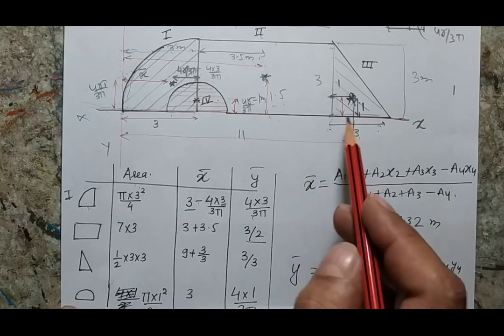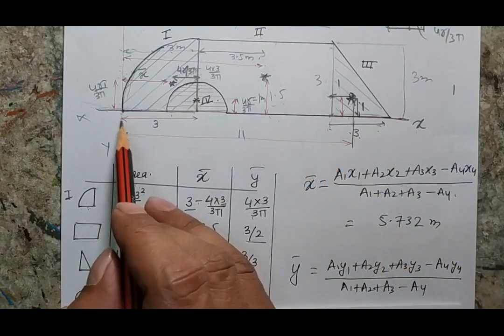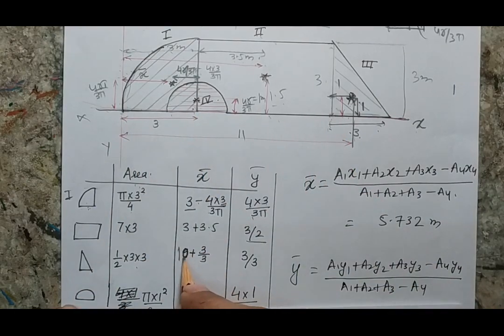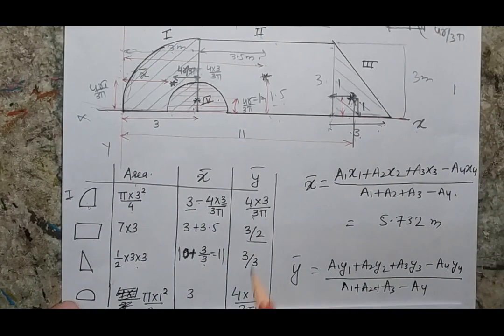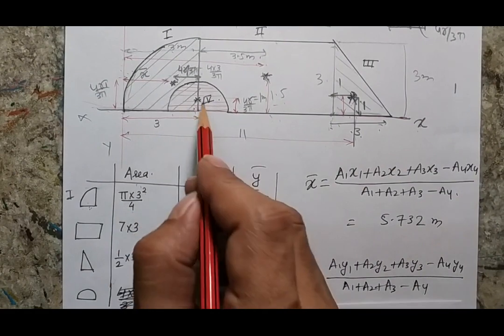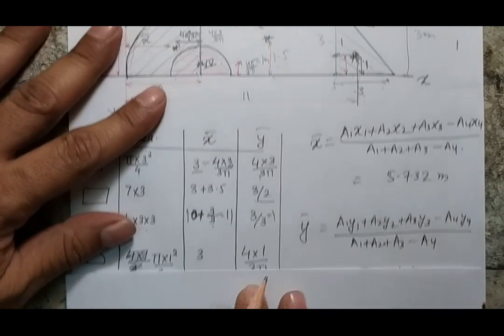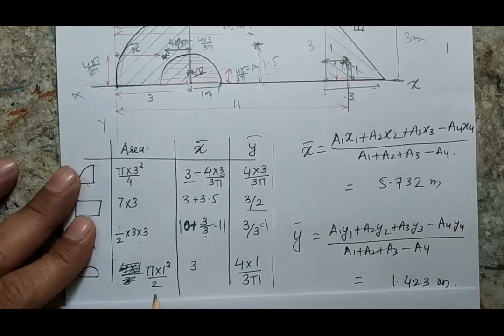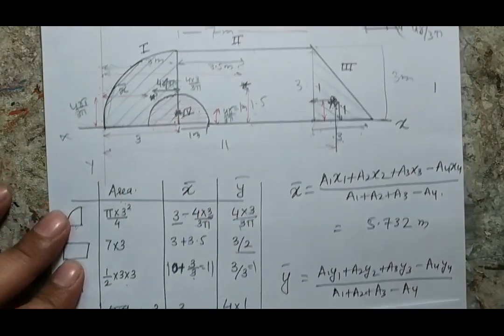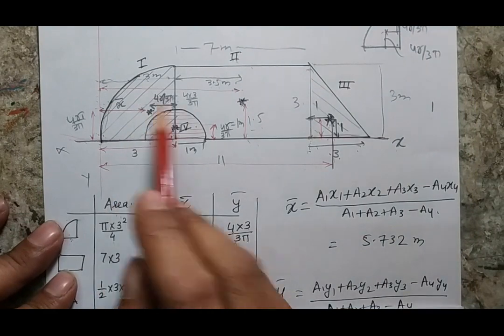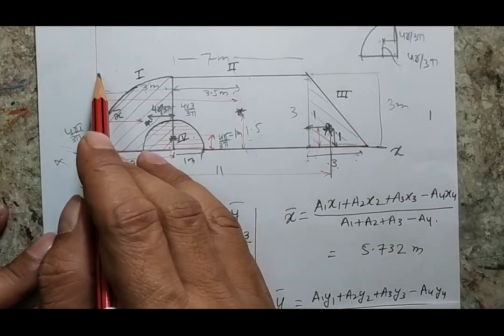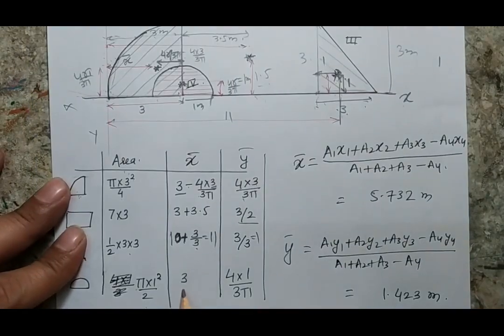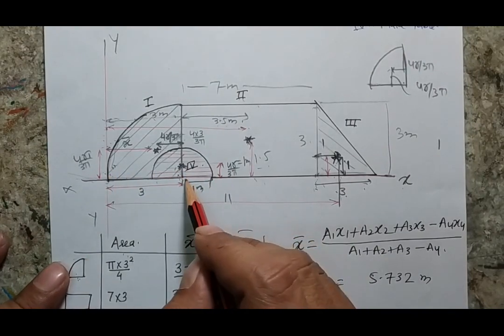For the third section, the area is half base times height. The x-position is 10 plus 3/3, which means 11, and the y is one-third of the side, equal to 1. For the semicircular arc section 4, the area is πR²/2 where R is 1 meter. The x-position with respect to the reference is 3, and the y-position is 4R/3π where R is 1 meter.